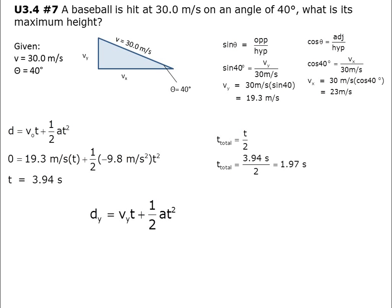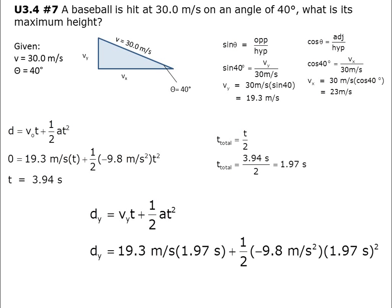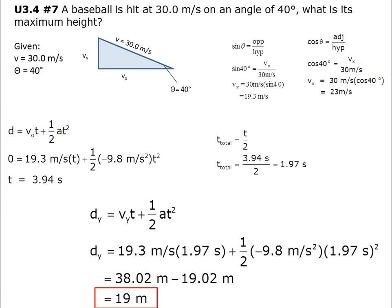dy equals Vy·t plus half of acceleration·t squared. So dy equals 19.3 meters per second multiplied by 1.97 seconds plus half multiplied by negative 9.8 meters per second squared multiplied by 1.97 seconds squared. That gives us 38.02 meters minus 19.02 meters. The answer is 19 meters.